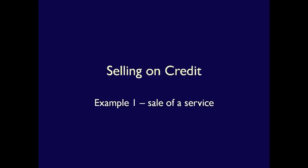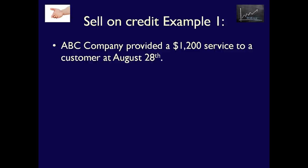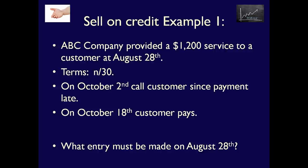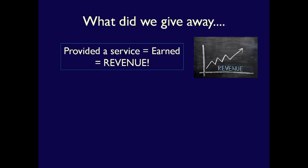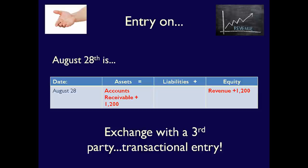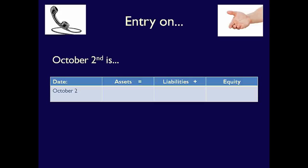Let's do a few examples to see how accounts receivable, called AR for short, are recorded. On August 28, 2014, ABC Company sells $1,200 of services to a customer on account, providing 30 days to pay the invoice. What did we give away? We gave away a service, so we record an increase to revenues. What did we get? We got a promise from the customer to pay in the future — accounts receivable. The entry on August 28 is an increase in assets of $1,200 and an increase in equity of $1,200.